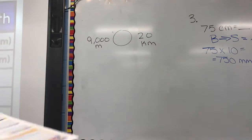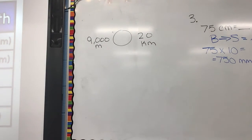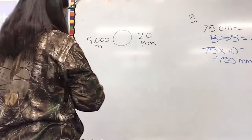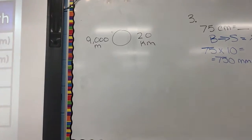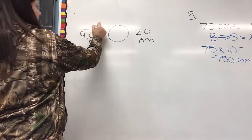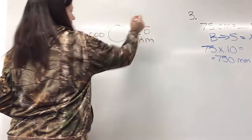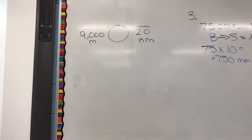9,000 meters is greater than, less than, or equal to 20 kilometers. Now, ladies and gentlemen, could you just simply look at your numbers here? 9,000 is bigger than 20. Is that all I have to look at?